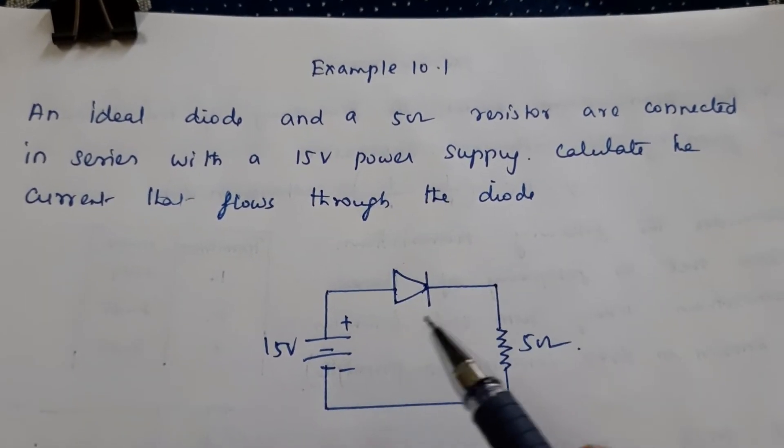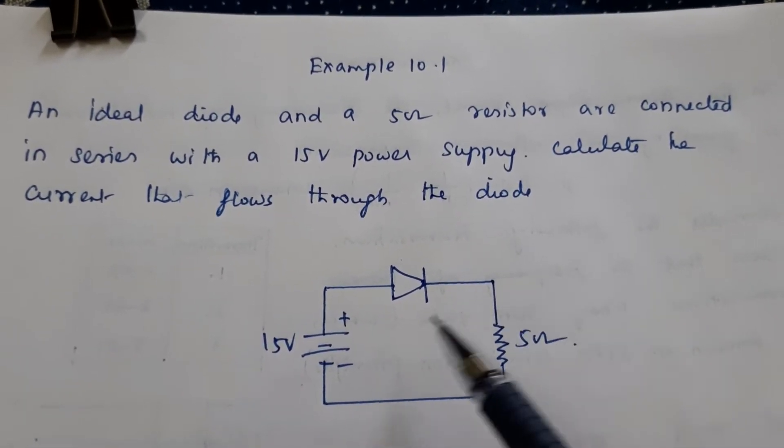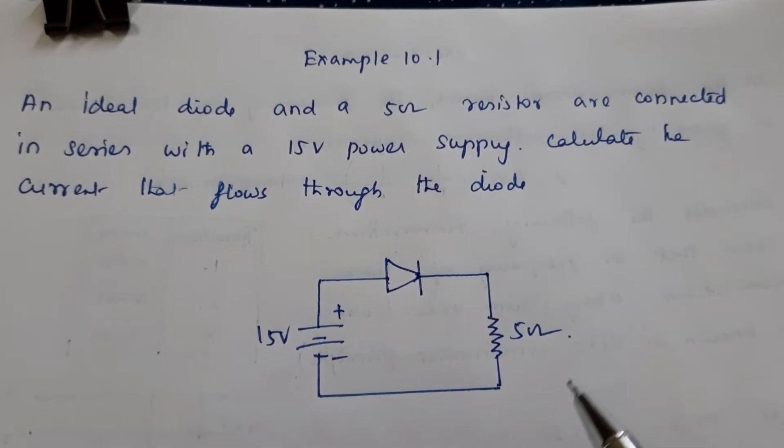So here this is the circuit. A 15 volt power supply and a resistance are connected. Now we have to find out what is the current passing through the circuit.